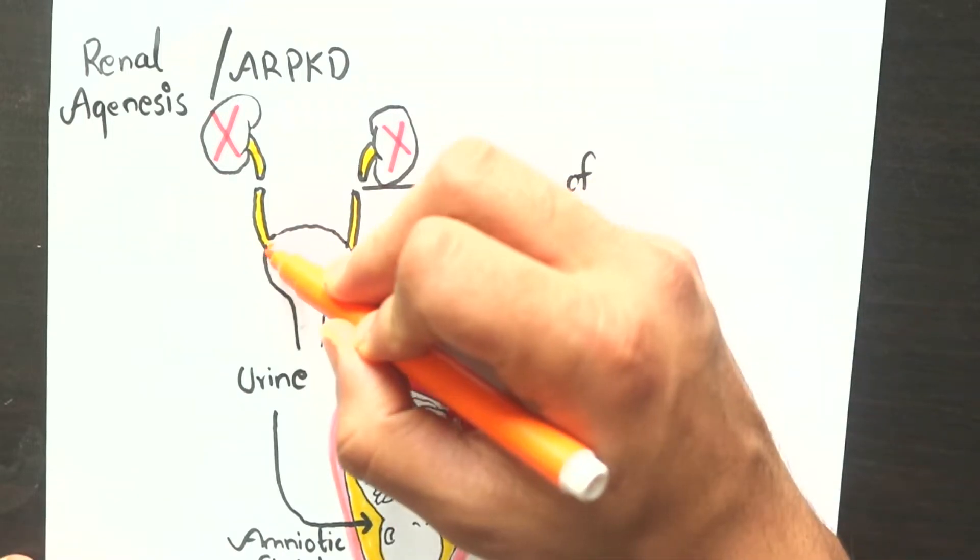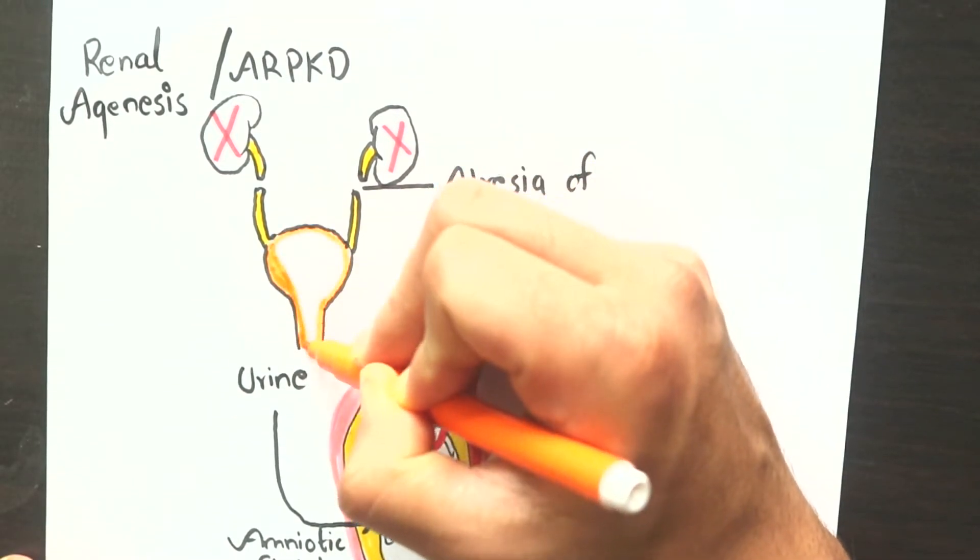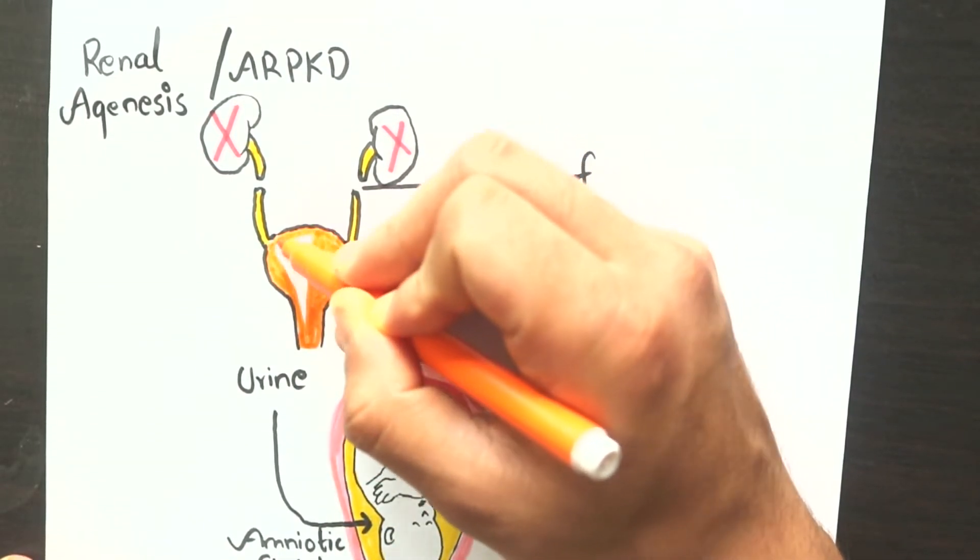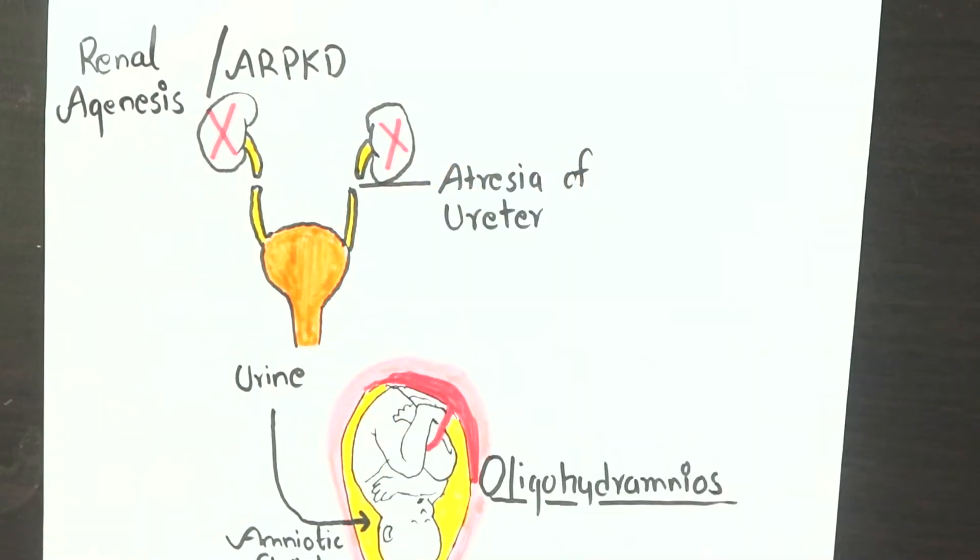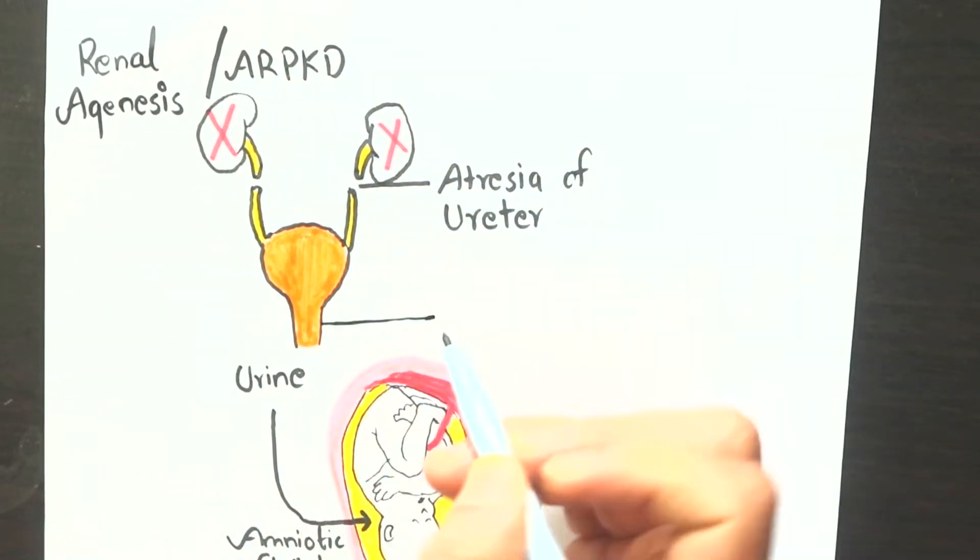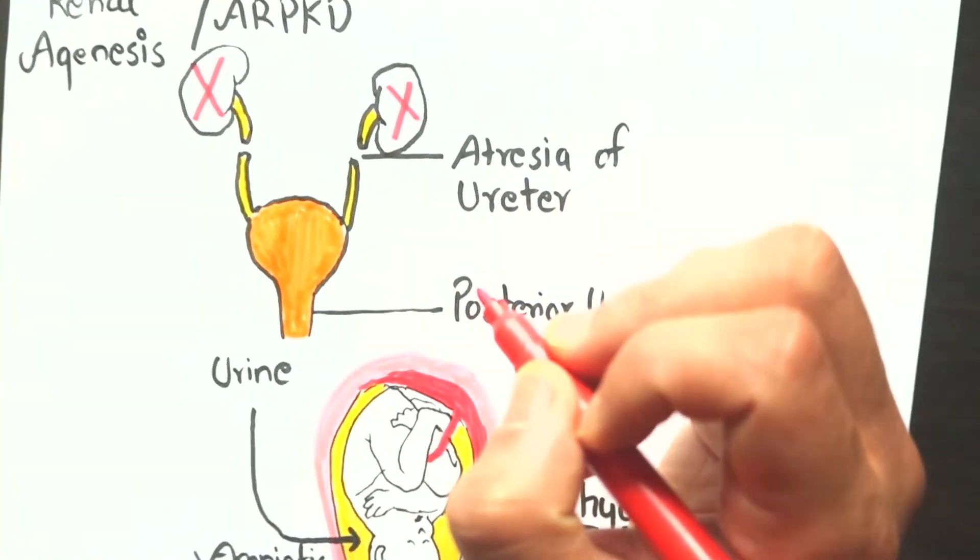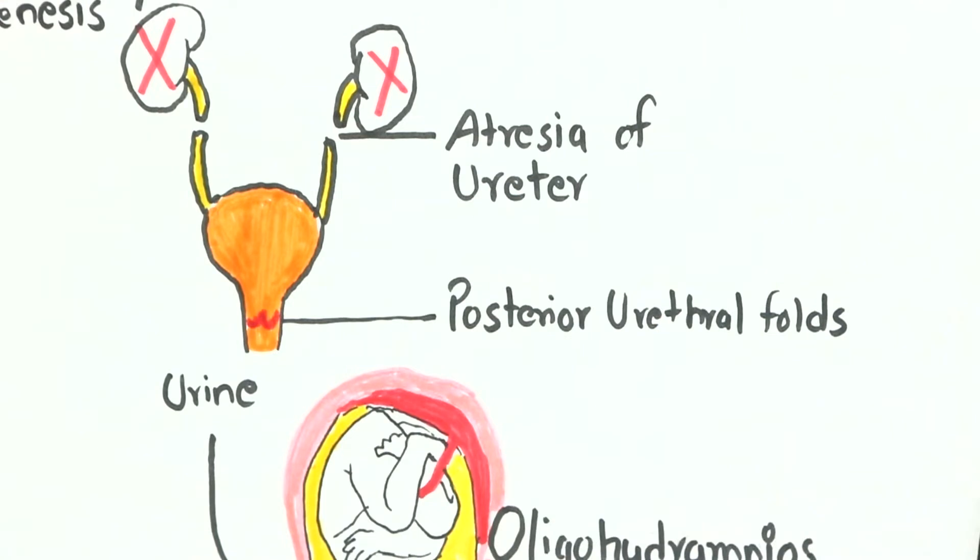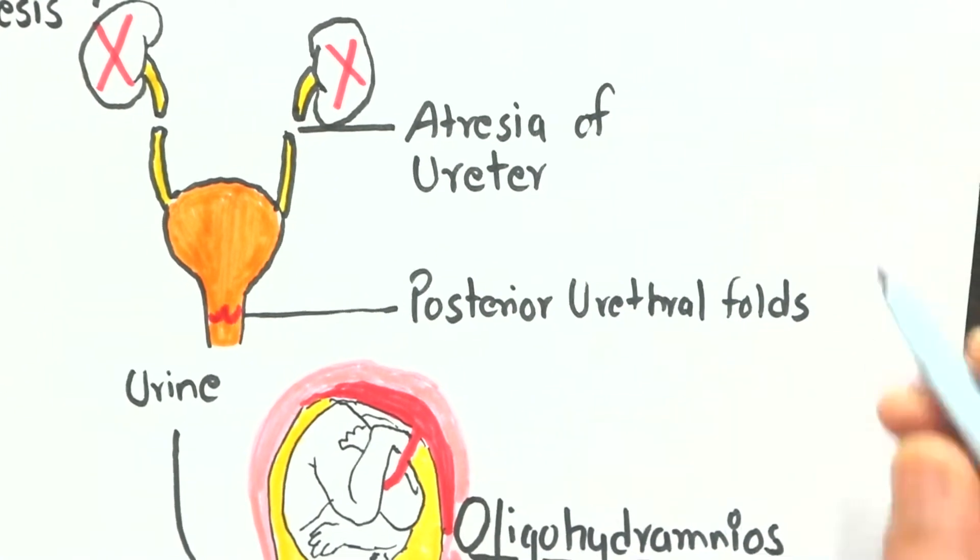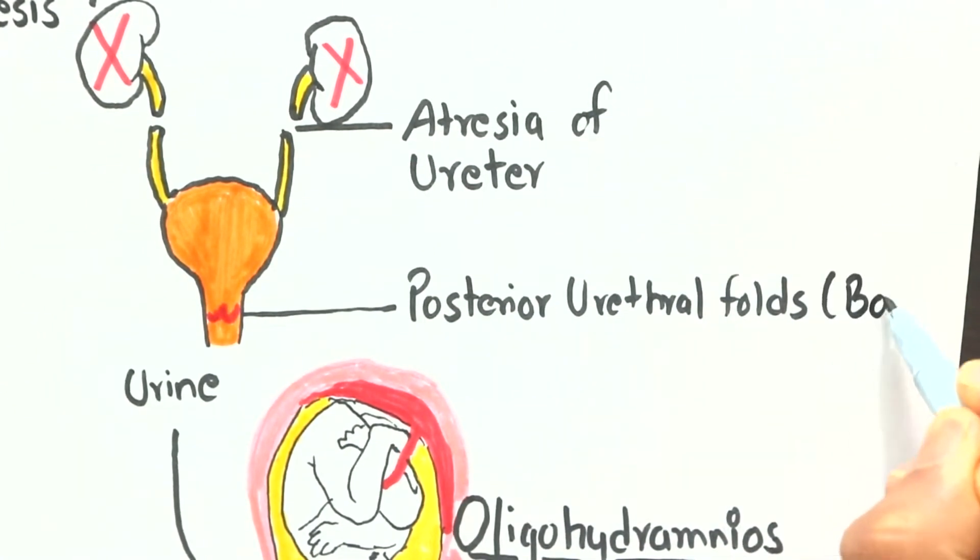Another condition that can lead to oligohydramnios is posterior urethral folds or valves. These are obstructive membranes that develop in the urethra and block the outflow of urine, and these are mainly seen in boys.